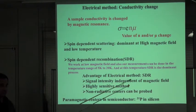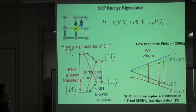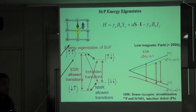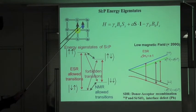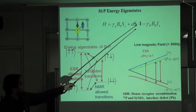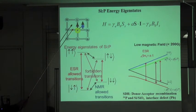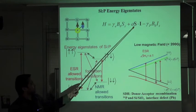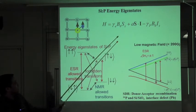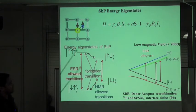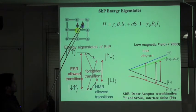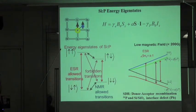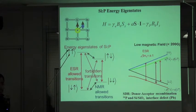This electrical method is used for detecting paramagnetic centers in semiconductors, for example, phosphorus electron spins in silicon. Phosphorus has a nuclear spin, and the electron spin is hyperfine coupled to this nuclear spin. The Hamiltonian describing this phosphorus atom in silicon includes the electron Zeeman term, the hyperfine interaction between electron and nuclear spins, and the nuclear Zeeman term. Phosphorus and the electron form four eigenstates.